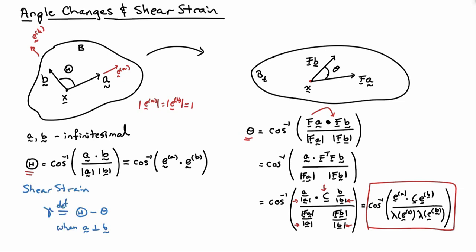Now, shear strain has a very particular definition. The shear strain gamma is defined to be the original angle minus the new angle when the two directions A and B are orthogonal to each other, so A dot B equals zero. You pick a point and you pick two directions that are orthogonal to each other, and then you can talk about the shear strain at that point with respect to those two directions.